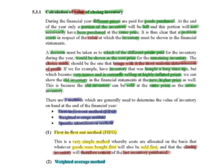But to put a rand value onto those units, this is where the problem comes in. Because during the financial year, different prices are paid for the goods that we've purchased. So when we get to the end of the financial year, only a portion of the inventory will now be left, and this portion will not necessarily have been purchased all at the same time.